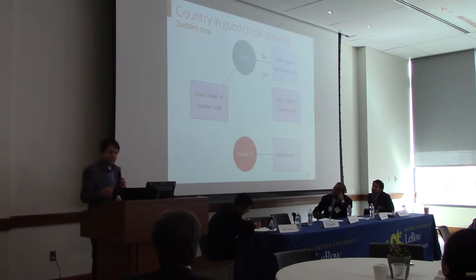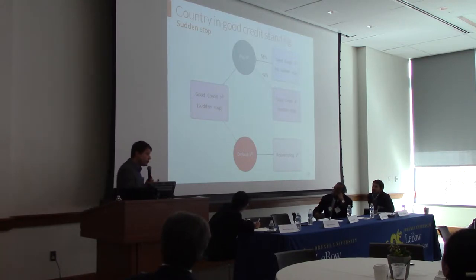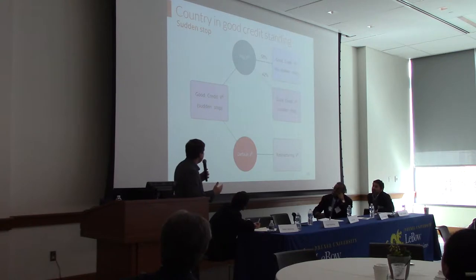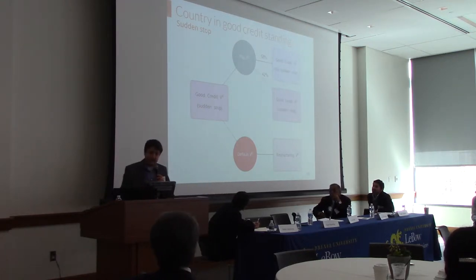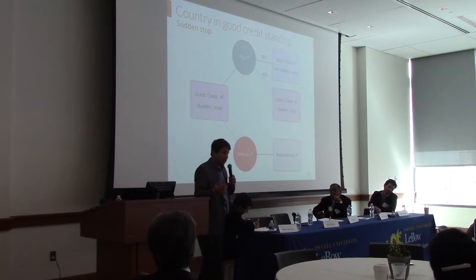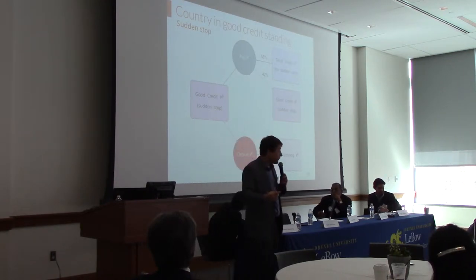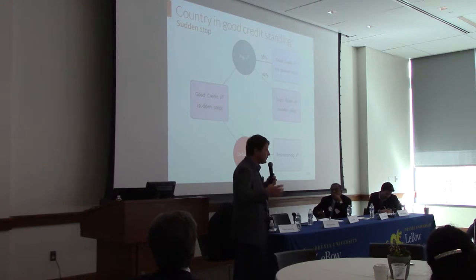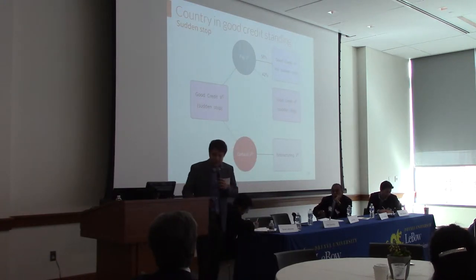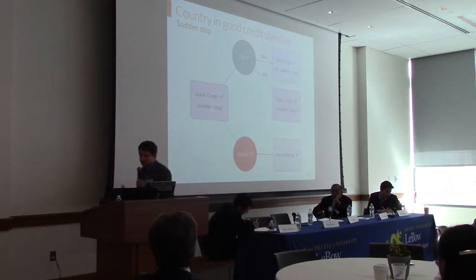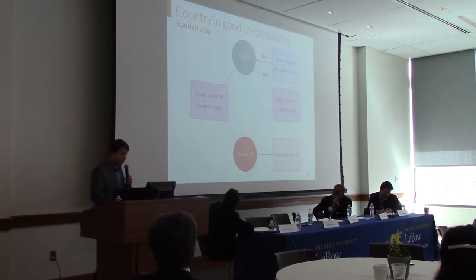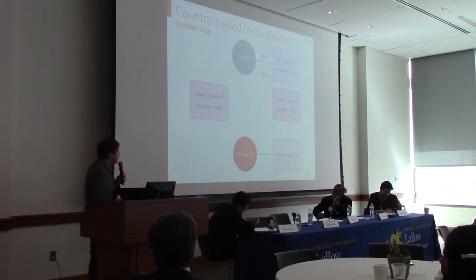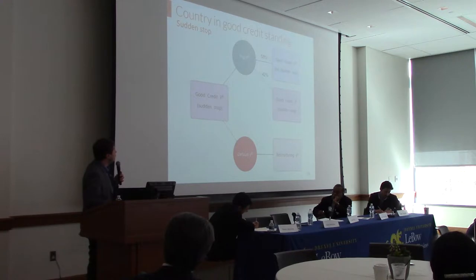When a country is in a sudden stop state, it still has the option of making payments but cannot borrow. The probability of continuing in exclusion is 42%, because these states are persistent — you may stay for one, two, or three years. The country can also default from this state, which also leads to restructuring.